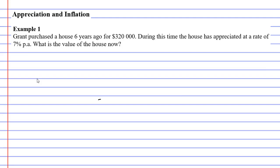What we need to do is use the compound interest formula: FV = PV(1+R)^N.